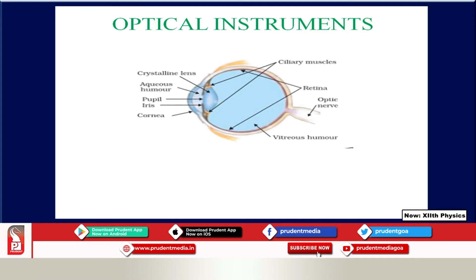Here is the figure of the eye. Light enters the cornea; we have the pupil and iris. Ciliary muscles hold the lens. The retina is where the image is formed, and the image is interpreted by the brain via the optical nerves. We need to learn about accommodation — the ciliary muscles contract and expand to have a good image on the retina by changing the focal length of the lens.